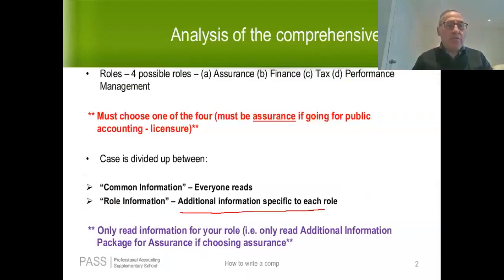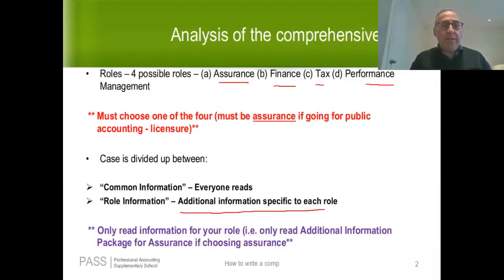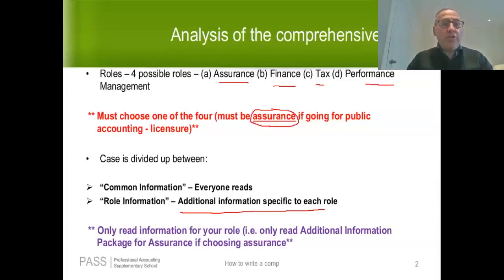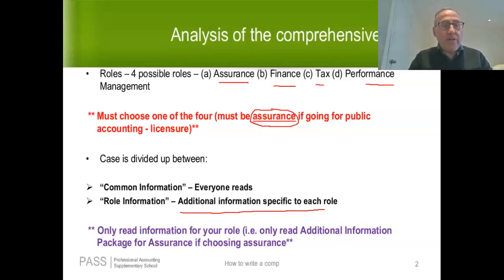On this comp there are four possible roles you can be asked to play: assurance, finance, tax, and performance management. If all you're interested in is getting your CPA and you're not planning to go into public accounting, it doesn't make a huge difference which role you choose — choose the area you're most comfortable with. However, if you're interested in your public accountant's license, you have to choose the assurance role. You would let CPA Canada know what role you're playing before you even write your comp.